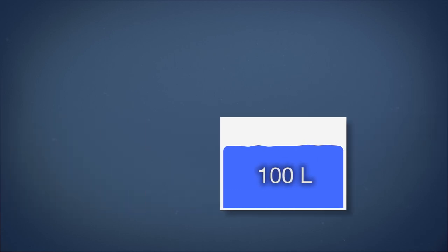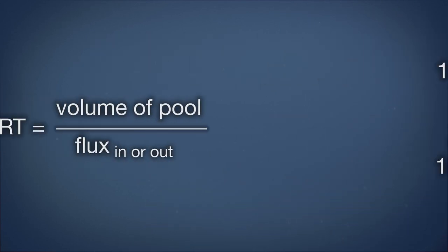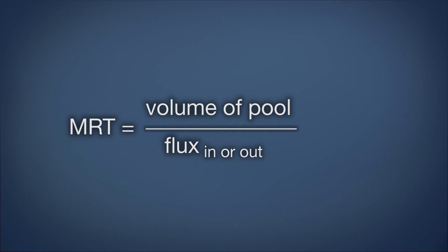A bucket with 100 liters of water in it might have a faucet that delivers 10 liters per day dripping in. If it has a hole in the bottom of the bucket that leaks out at 10 liters per day, we can state that the water bucket system is in steady state because inputs equals outputs.